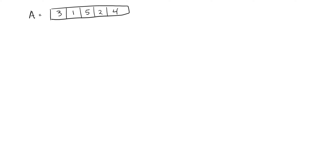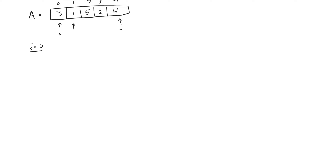Let's talk about the first iteration of bubble sort. We're zero-indexing things, so we start with index zero all the way up to four. First, what we're going to do is set a pointer I pointing to the first element, and then set another pointer J pointing to the last element. We work J down — we iterate J down until we get right to the element that is right in front of I, and we stop J right there.